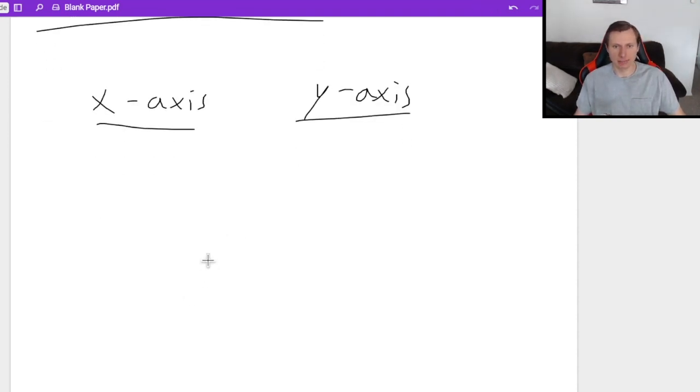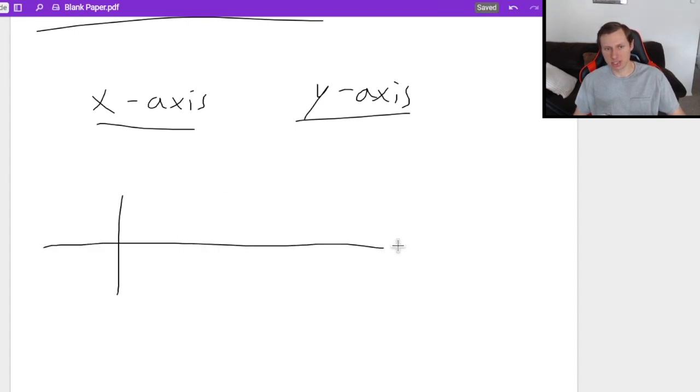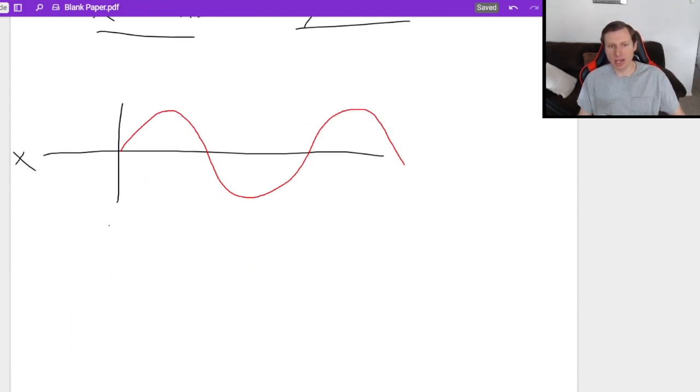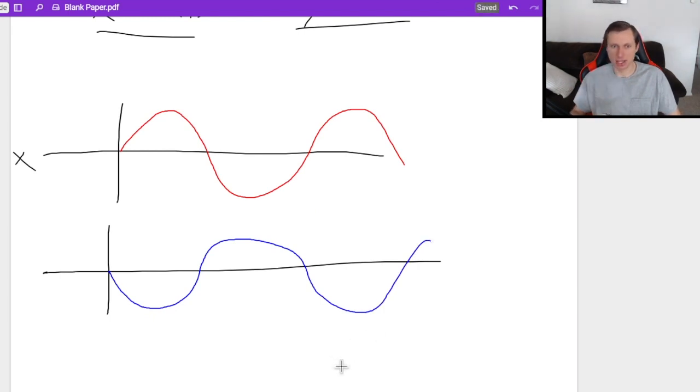Let me show you what both look like with the sine graph specifically. So with this sine graph, this is what a normal sine graph looks like, something like that. And if you reflect it along the x-axis, remember this is the x-axis, the horizontal one. If you reflect it along the x-axis, your graph will now look like this. It will be a mirror image flip going the other way, just like that.